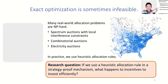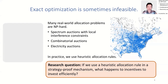To give one example: spectrum auctions with local interference constraints. On the right is the interference constraint graph for the 2017 FCC incentive auction. Each node is a television station, and each edge represents the fact that those two TV stations cannot be assigned to the same channel without interfering with each other. So the question of which TV stations should be on the air comes down to graph coloring — can I color the nodes with a certain number of colors such that no two adjacent nodes share a color? That is one of the canonical NP-complete problems in computer science.